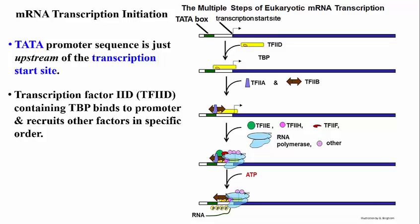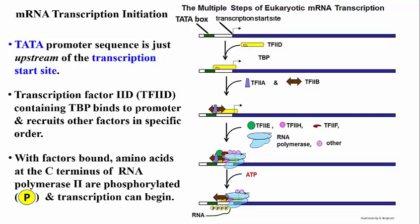One of the last proteins to add is RNA polymerase II, the polymerase responsible for messenger RNA transcription in eukaryotes. The last step in initiation is a phosphorylation event. The carboxyl end of RNA polymerase II gets those phosphates and becomes active, and the activated polymerase can begin new RNA strand transcription.